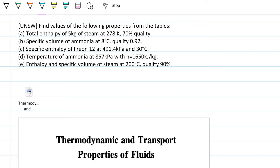This is a question from UNSW. Find values of the following properties from the tables. A: Total enthalpy of 5 kg of steam at 278 K, 70% quality. B: Specific volume of ammonia at 8 degrees Celsius, quality of 0.92. C: Specific entropy of Freon 12 at 491.4 kilopascals and 30 degrees Celsius. D: Temperature of ammonia at 857 kilopascals with an entropy of 1650 kilojoules per kilogram. And E: Entropy and specific volume of steam at 200 degrees Celsius and quality of 90%.